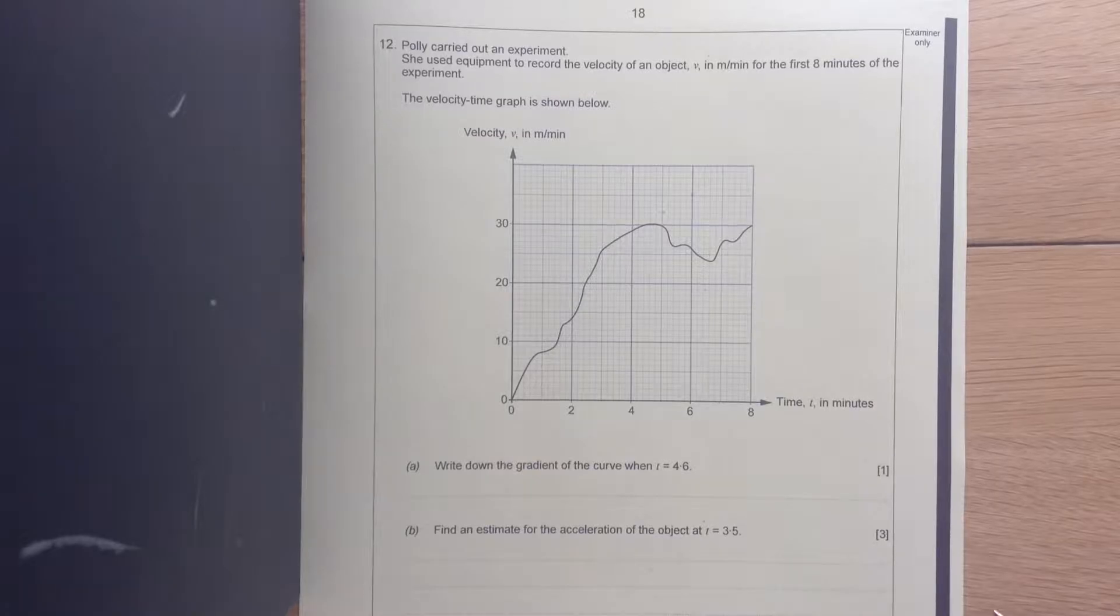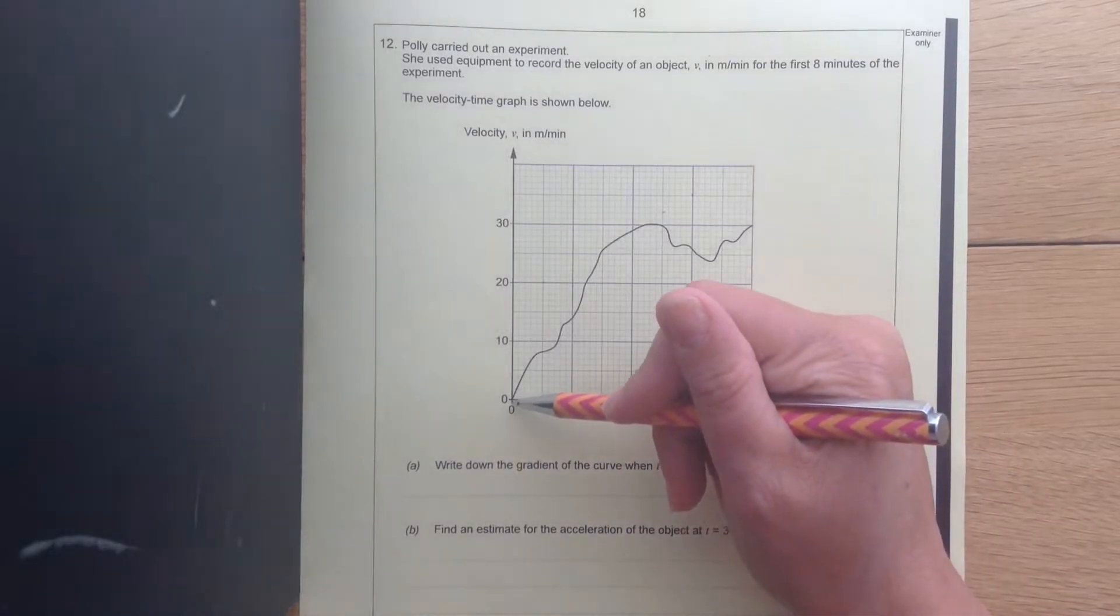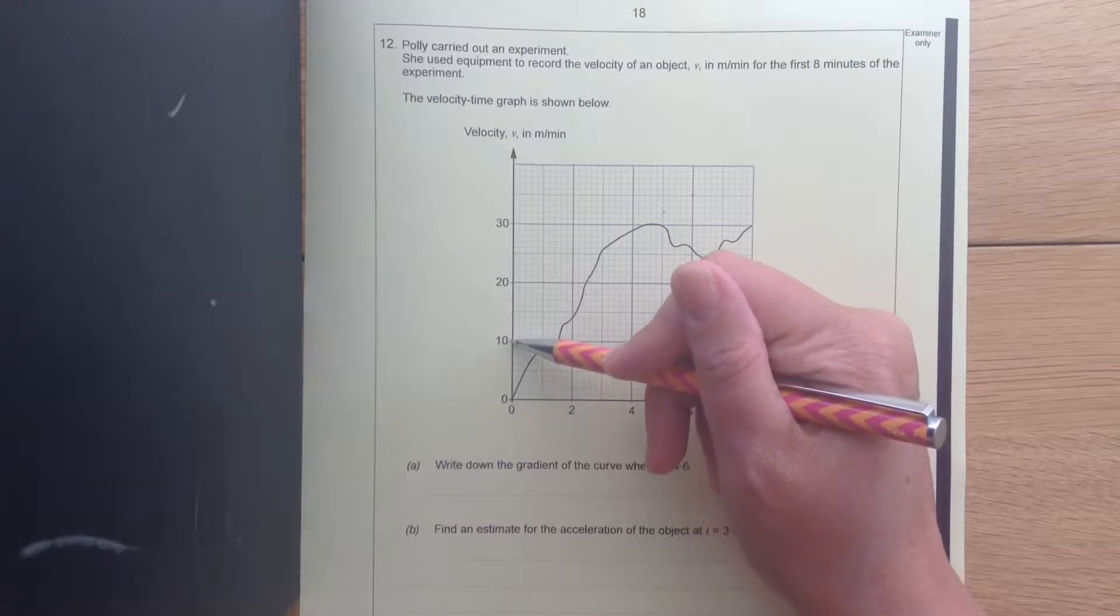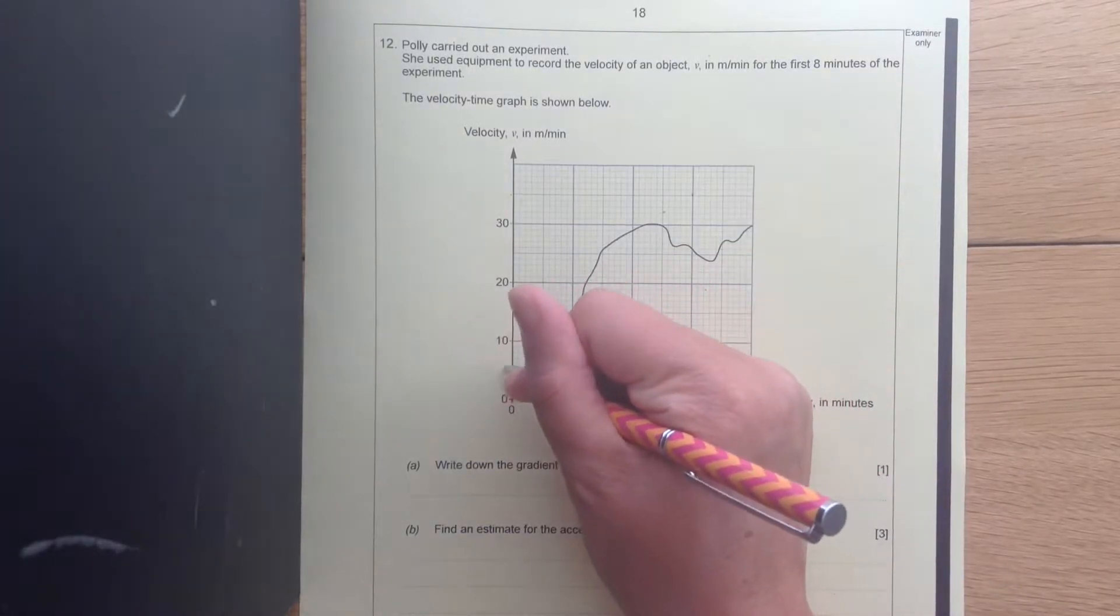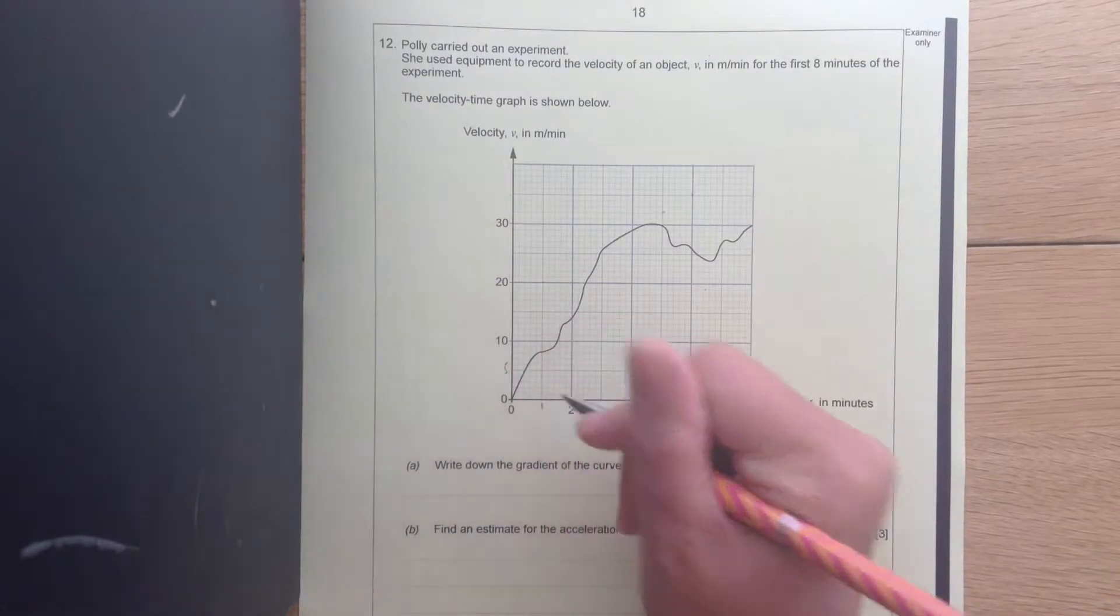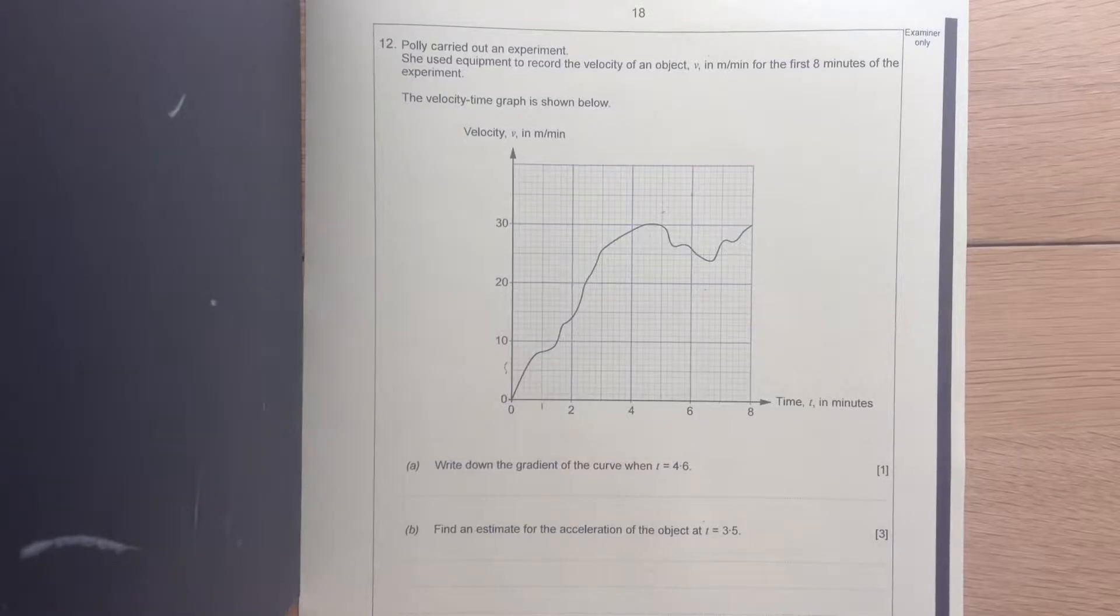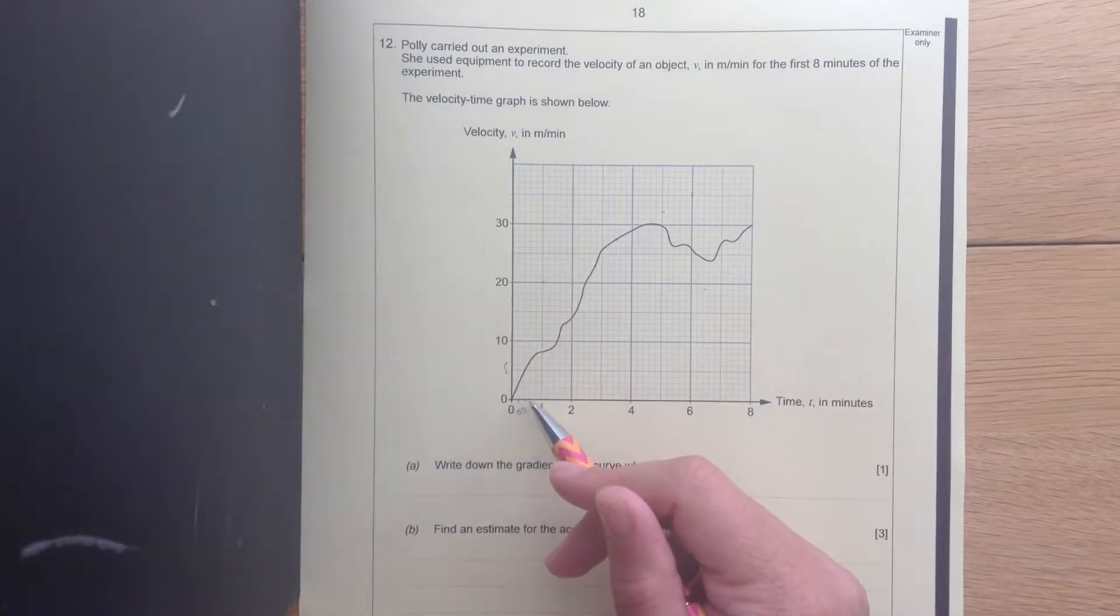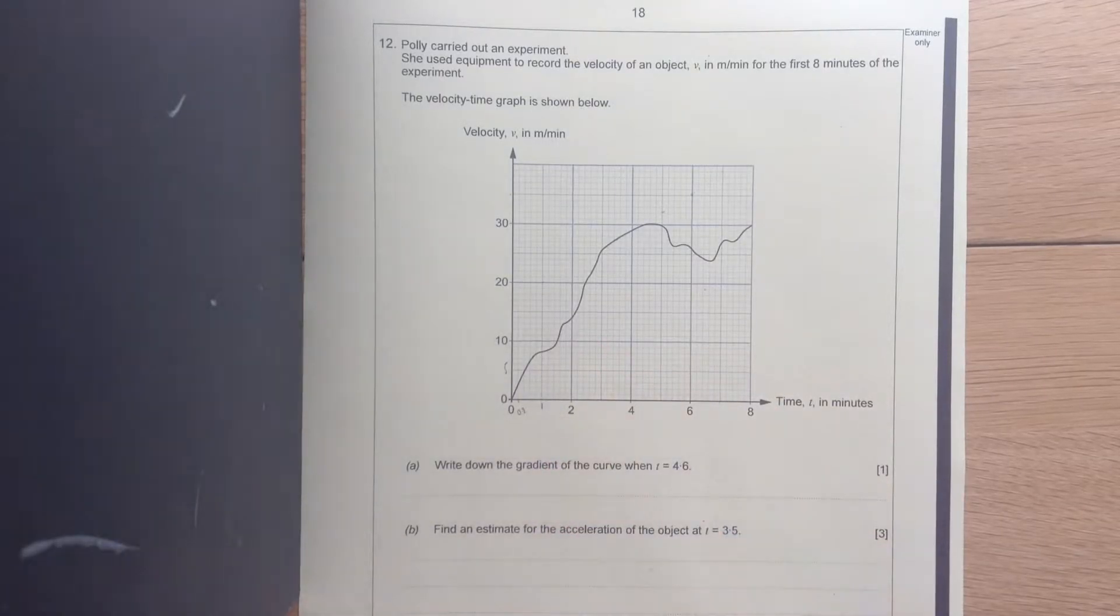Okay, let's check out our scales before we start. Going up for our velocity, that's easy. Every small division is going to be 1. So we have 10 small divisions between 0 and 10. Going along, we've got 10 divisions to be 2. So every small division here is 0.2. So 0.2, 0.4, 0.6, 0.8, 1, etc.